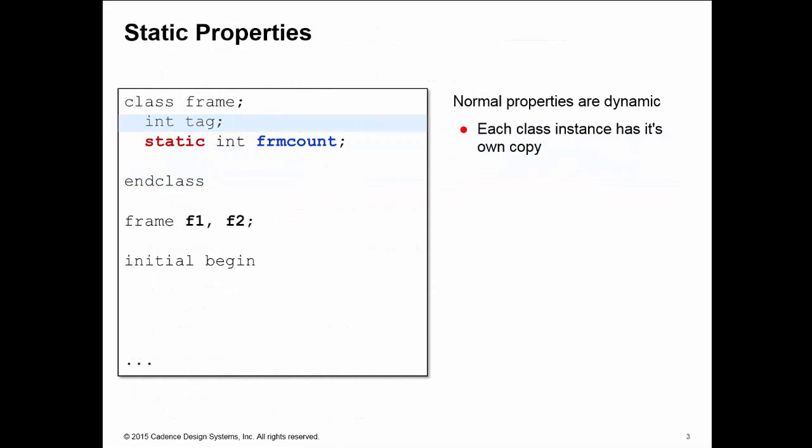A normal property is dynamic. This means that every instance of your class has its own separate copy of that property. But you can declare properties as being static.